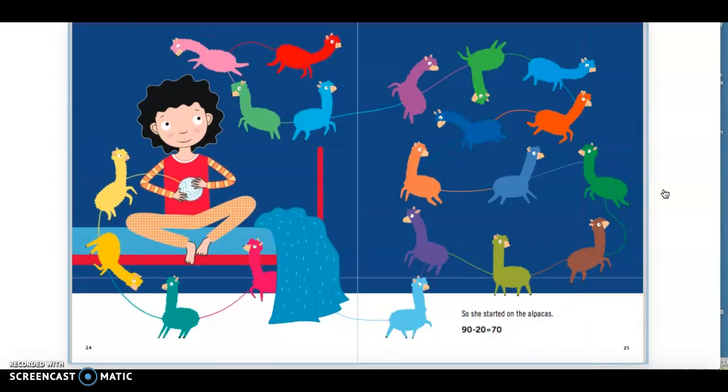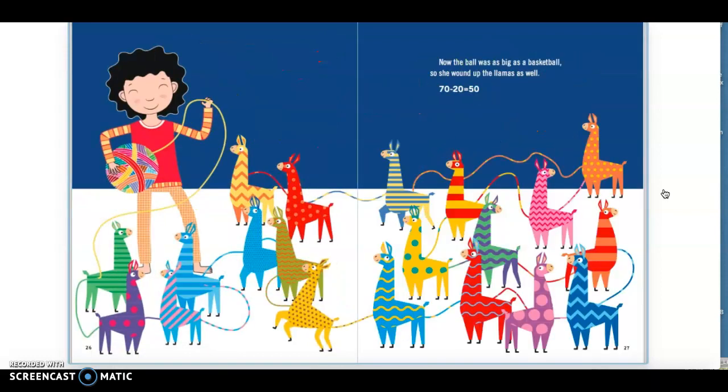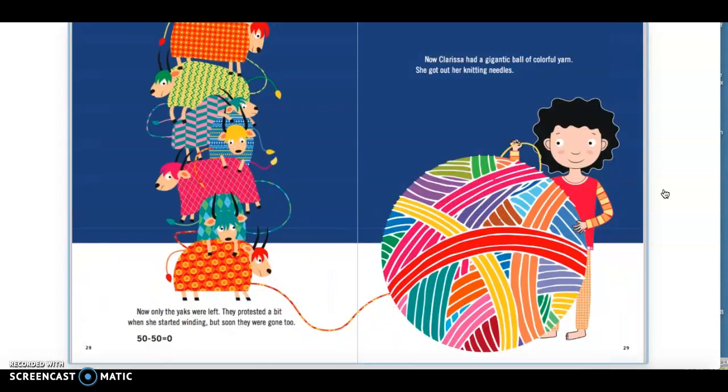So she started on the alpacas. Ninety minus twenty equals seventy. And now the ball was as big as a basketball, so she wound up the llamas as well. Seventy minus twenty equals fifty. Now only the yaks were left. They protested a bit when she started winding, but soon they were gone too. Fifty minus fifty equals zero.